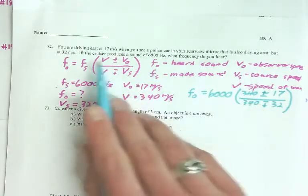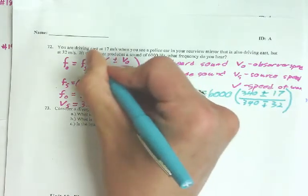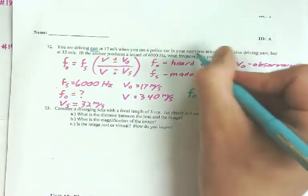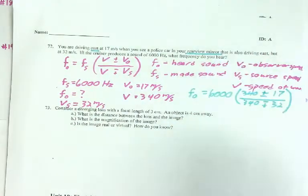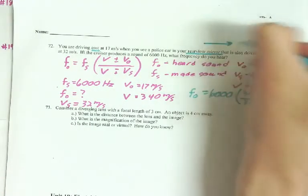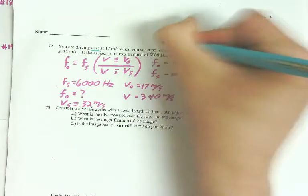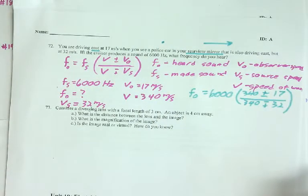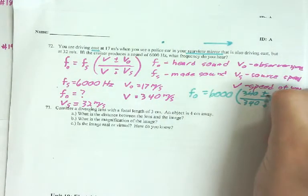So, I look at this and say, what am I doing? So, I'm going east and the police car is behind me. So, I'm going away from him. He's behind me. So, I'm facing away from him. So, I'm doing something like this and he's behind me somewhere. So, I'm going away. So, I pick my bottom sign, which is minus.